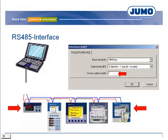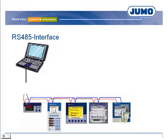Different addresses must be chosen for all devices. In the example, addresses 1 up to 5 could be chosen. If a computer includes a serial interface, this is normally an RS-232 interface. With this three-wire interface, point-to-point communications can be realized over a distance up to 30 meters. An interface converter transforms the signals between RS-232 and RS-485 interfaces. The converter needs a power supply, and no further configuration is necessary.